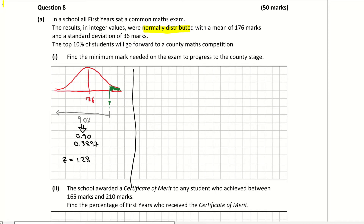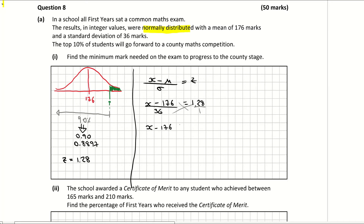I'm then going to solve that now to find out the marks. So I'm filling in my Z score formula: X is what I need to find, my mu is the mean which is 176, and sigma is my standard deviation which is 36. Z is my Z score which is 1.28. Cross multiplying gives me X minus 176 equals 36 times 1.28, which is 46.08. Adding 176 to both sides: 46.08 plus 176 gives me a mark of 222.08.